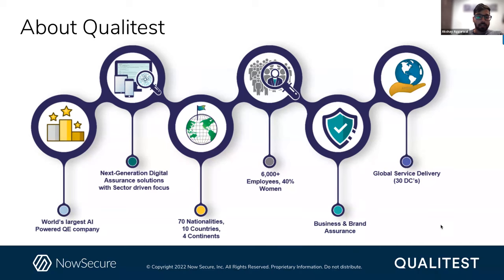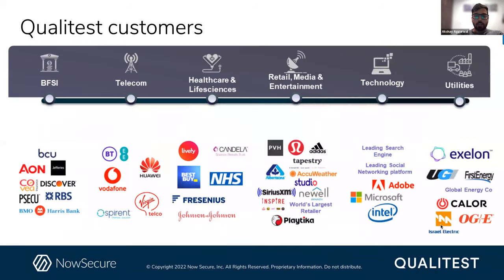We have more than two decades of delivering quality IT engineering services across industries, delivery methodologies, and technologies. We work with some of the biggest names in the world, including from BFSI: RBS, Discover, BCU; from telecom: Huawei, Virgin; healthcare and life sciences: Johnson & Johnson; retail: Adidas; and technology behemoths like Microsoft, Google, and Adobe. We also have customers from the utility and energy sector.